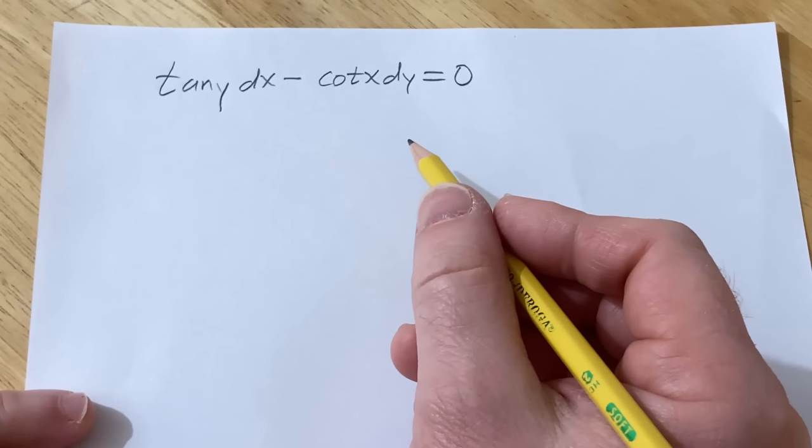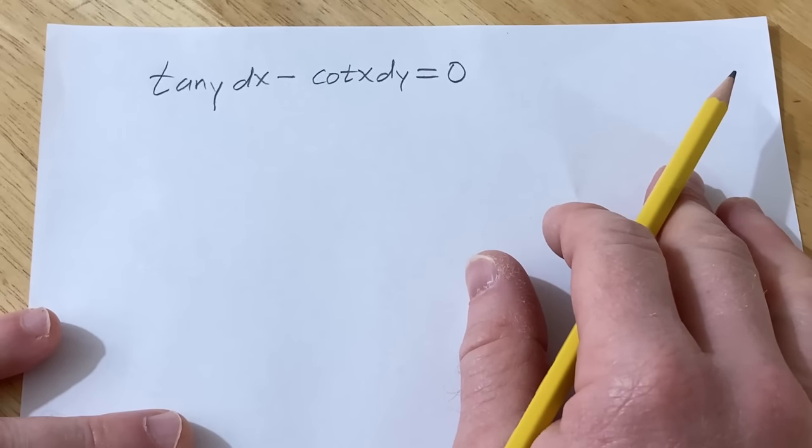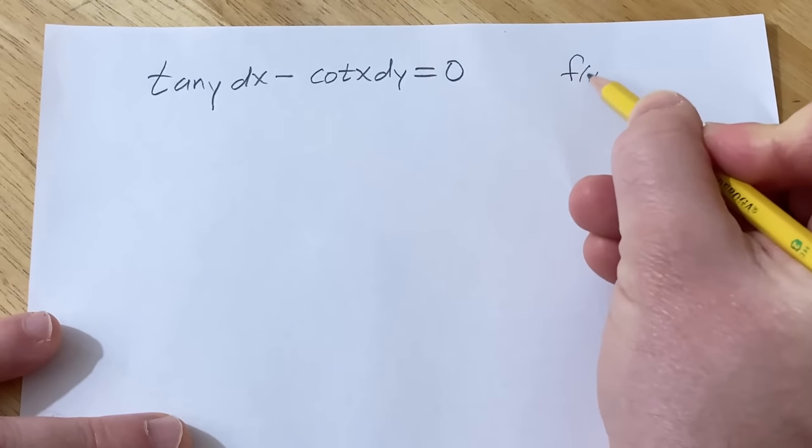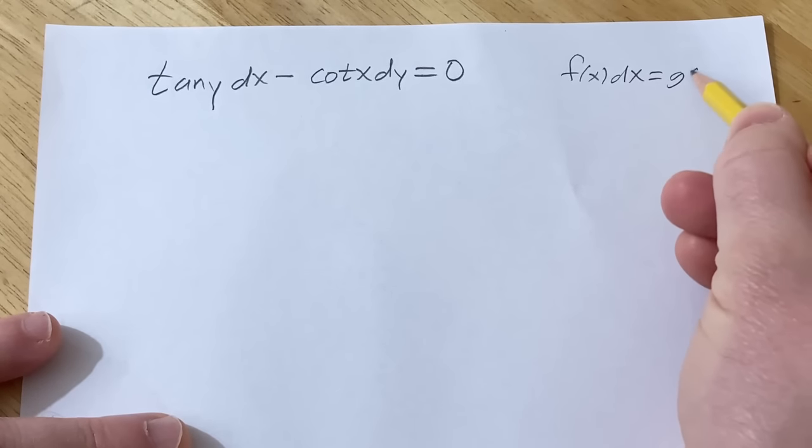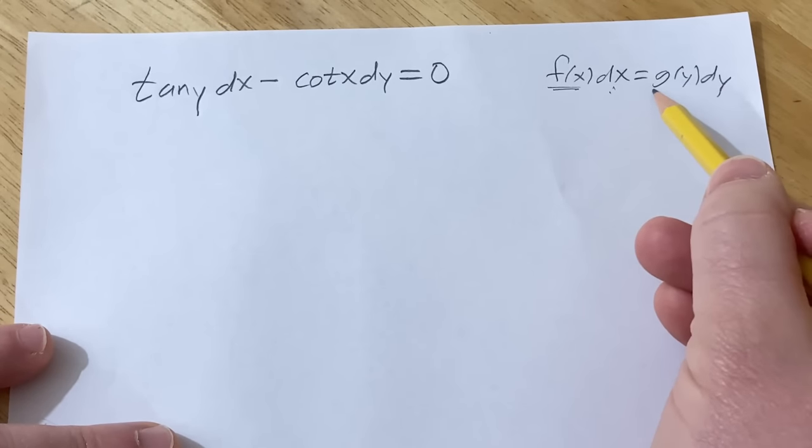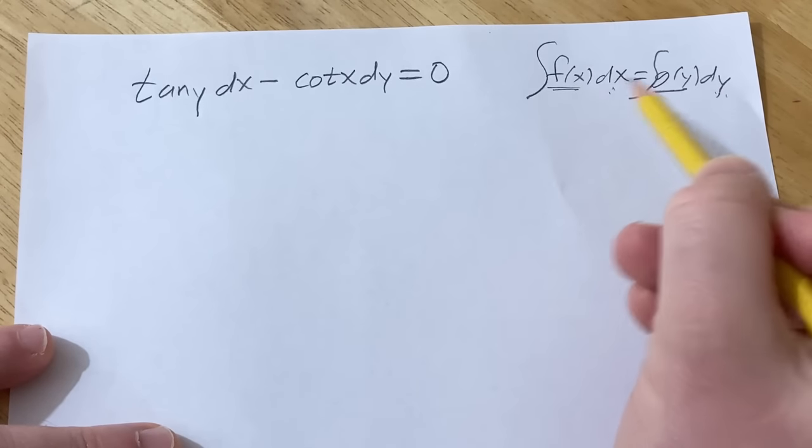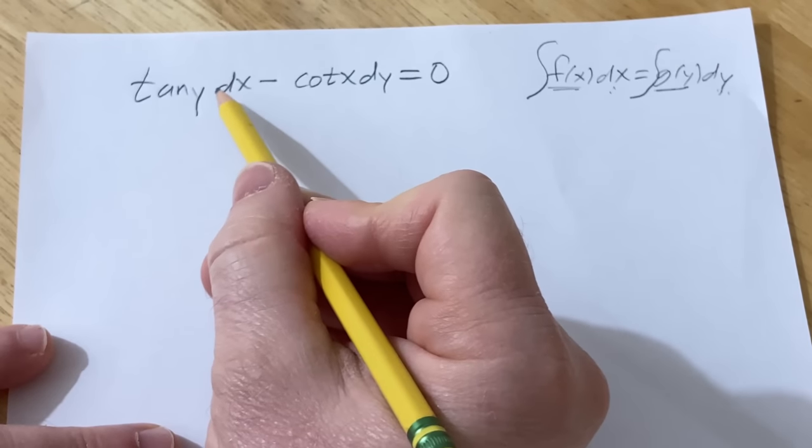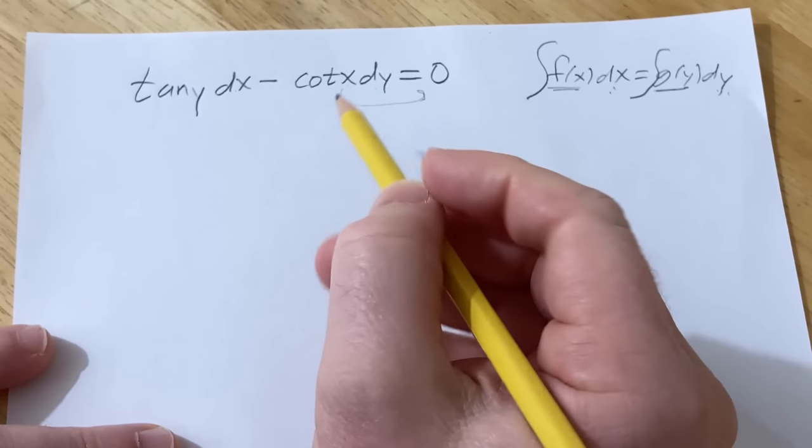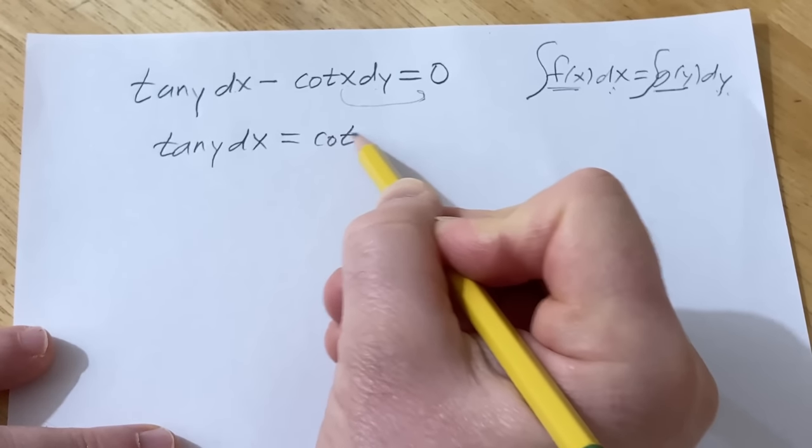All right, let's go ahead and solve this differential equation. So this differential equation is going to be what's called a separable differential equation. Basically, the goal in solving a problem like this is to separate everything. So you want basically f(x)dx on one side and g(y)dy on the other. Once you have that, what you can do is you can integrate both sides and you can go from there. So in this case, you notice we have a y here in a dx and x here in a dy. So as a good first step, maybe let's just add this over to the other side.